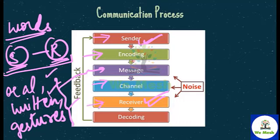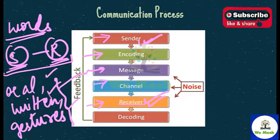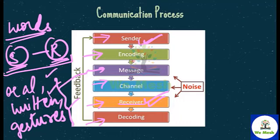The next term is receiver. The receiver is the person who receives the message. The communication process is incomplete without the receiver — communication will not be completed until the receiver receives the information sent by the sender. It is the receiver who receives and tries to understand the message, and if the message does not reach the receiver, then communication cannot be said to have taken place. Decoding is the process by which the receiver draws meaning from the symbols encoded by the sender. It is affected by the receiver's past experience, education, perception, expectations, and mutuality of meaning with the sender.